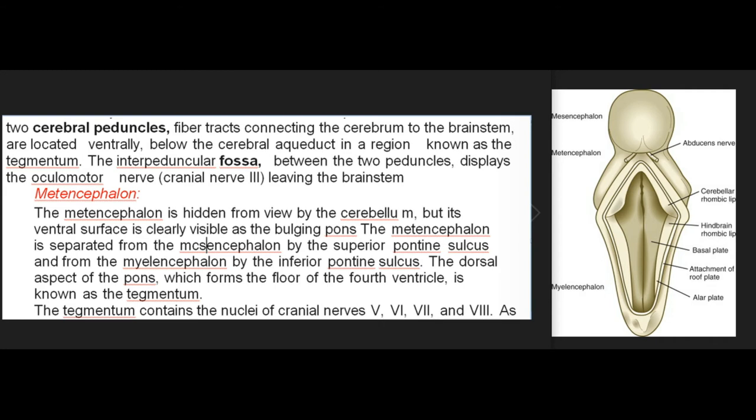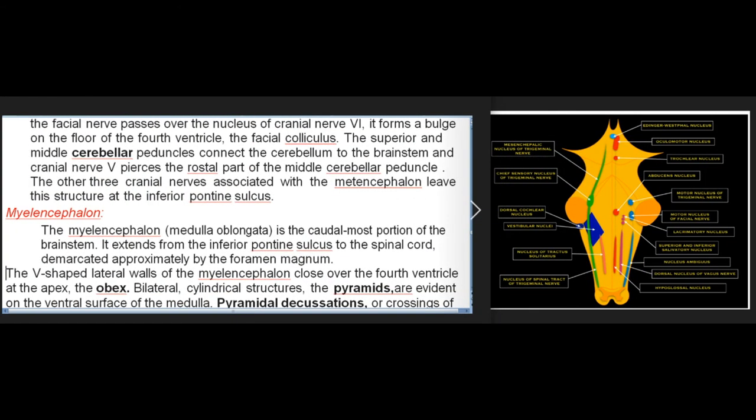The metencephalon is hidden from view by the cerebellum, but its ventral surface is clearly visible as the bulging pons. It is separated from the mesencephalon by the superior pontine sulcus and from the myelencephalon by the inferior pontine sulcus. The dorsal aspect of the pons, which forms the floor of the fourth ventricle, is known as the tegmentum; it contains the nuclei of cranial nerves V, VI, VII, and VIII. As the facial nerve passes over the nucleus of cranial nerve VI, it forms a bulge on the floor of the fourth ventricle called the facial colliculus. The superior and middle cerebellar peduncles connect the cerebellum to the brainstem, and cranial nerve V pierces the rostral part of the middle cerebellar peduncle. The other three cranial nerves associated with the metencephalon leave at the inferior pontine sulcus.